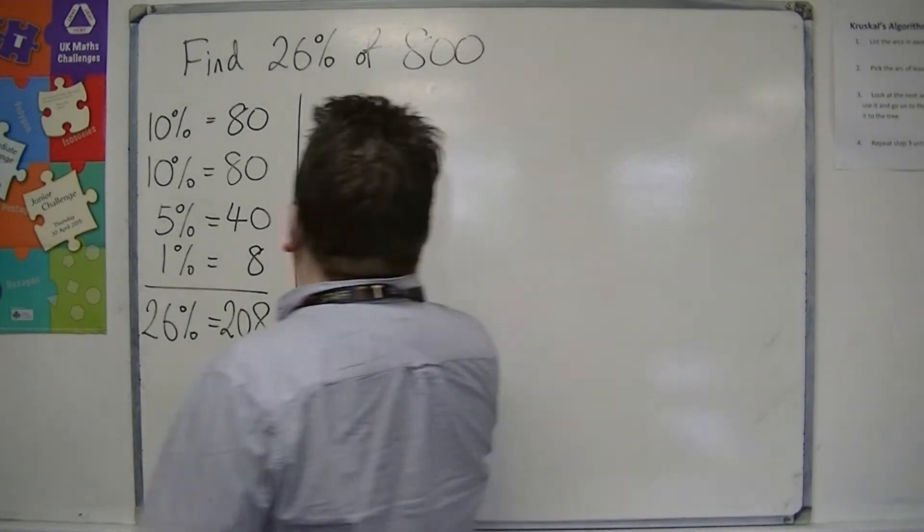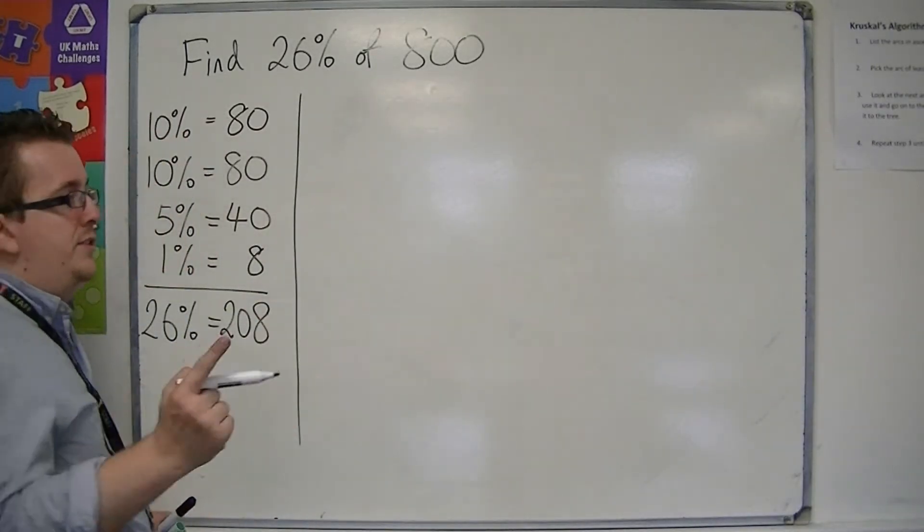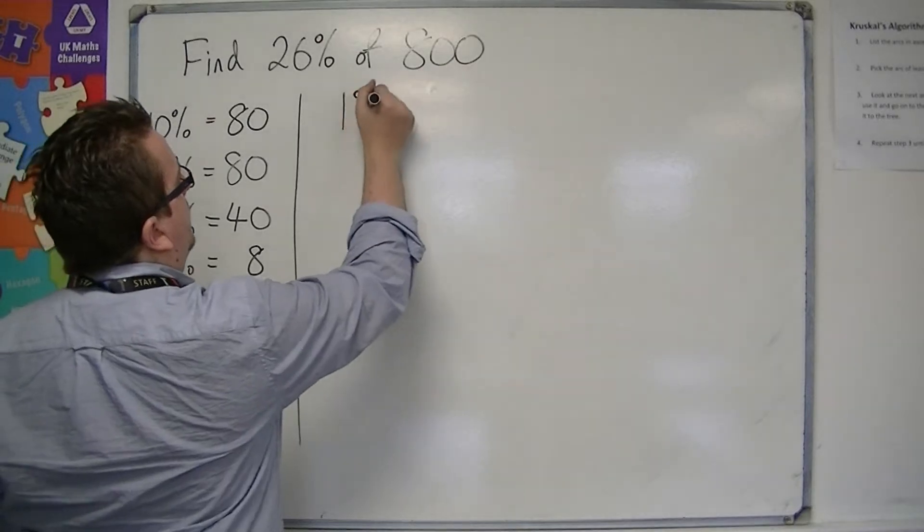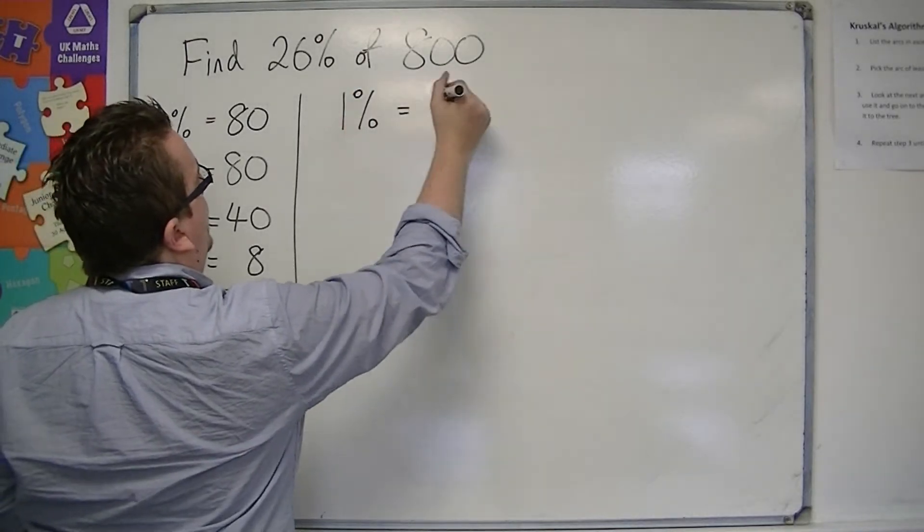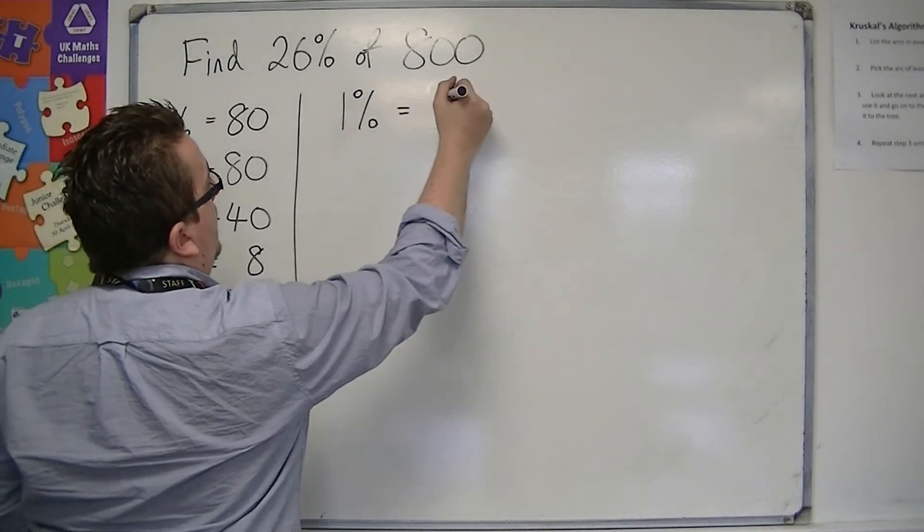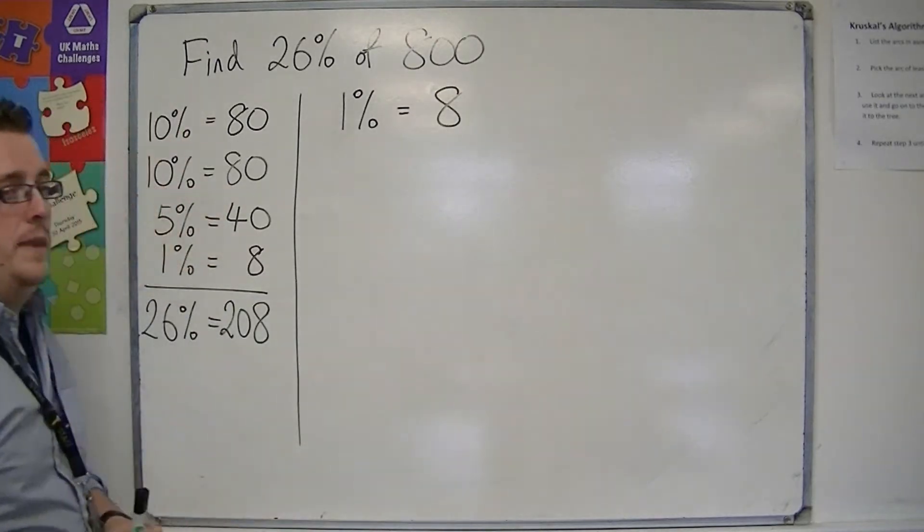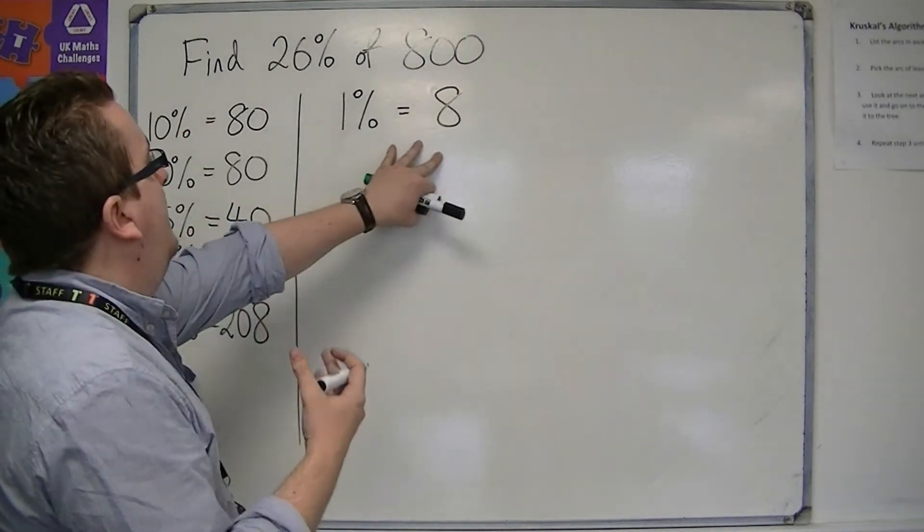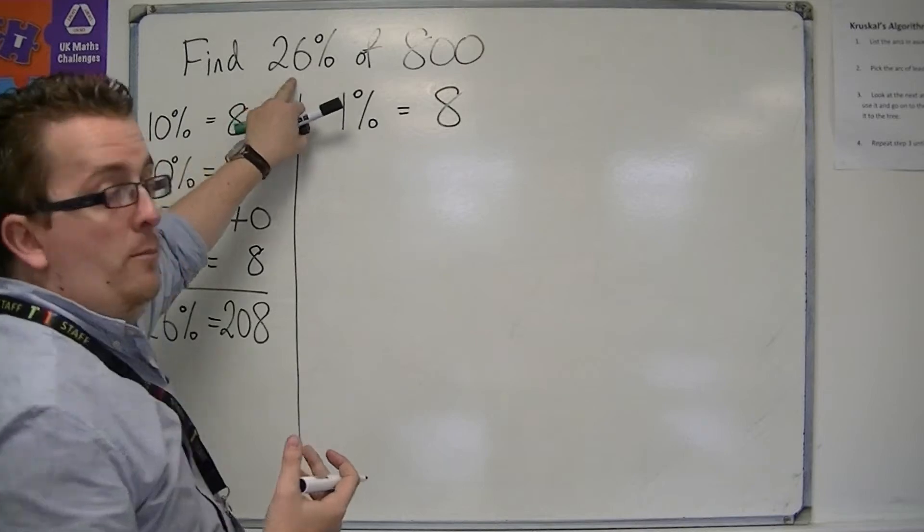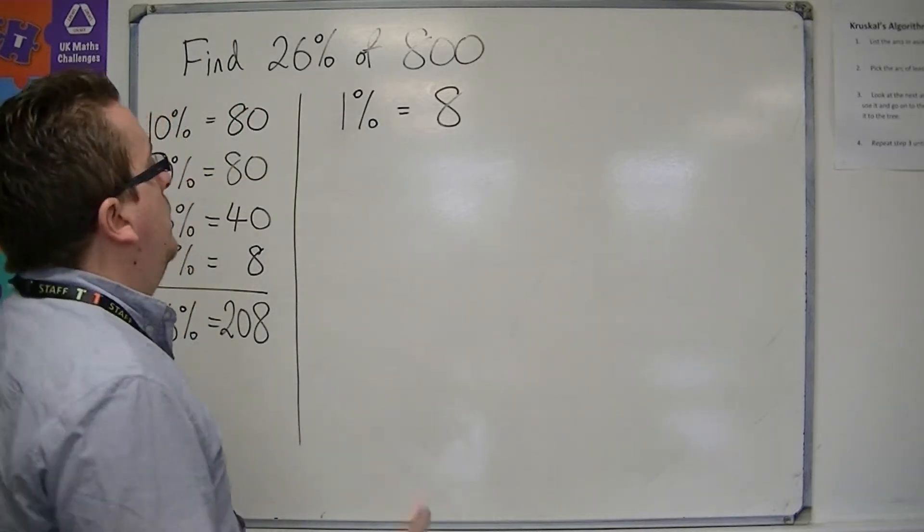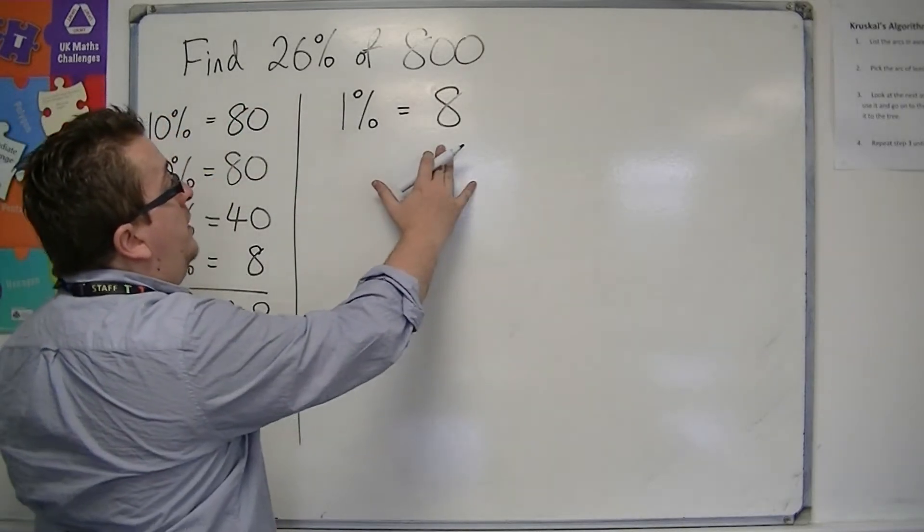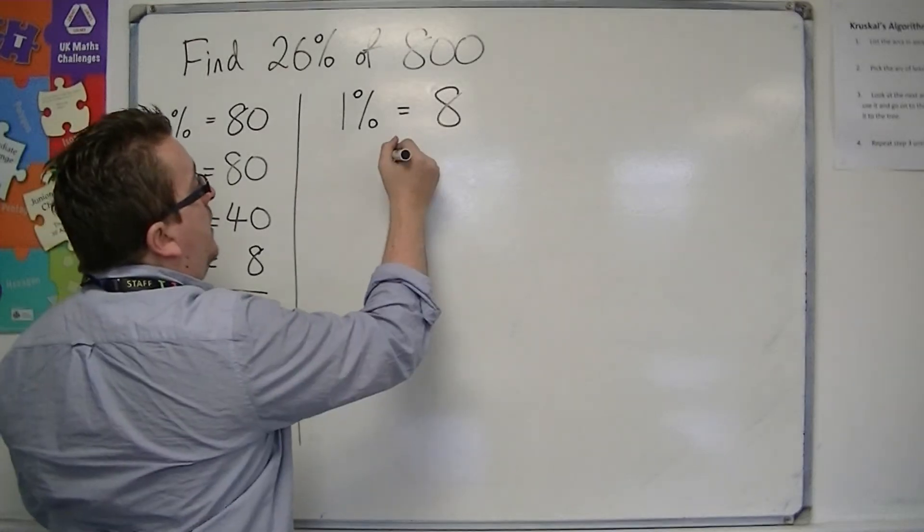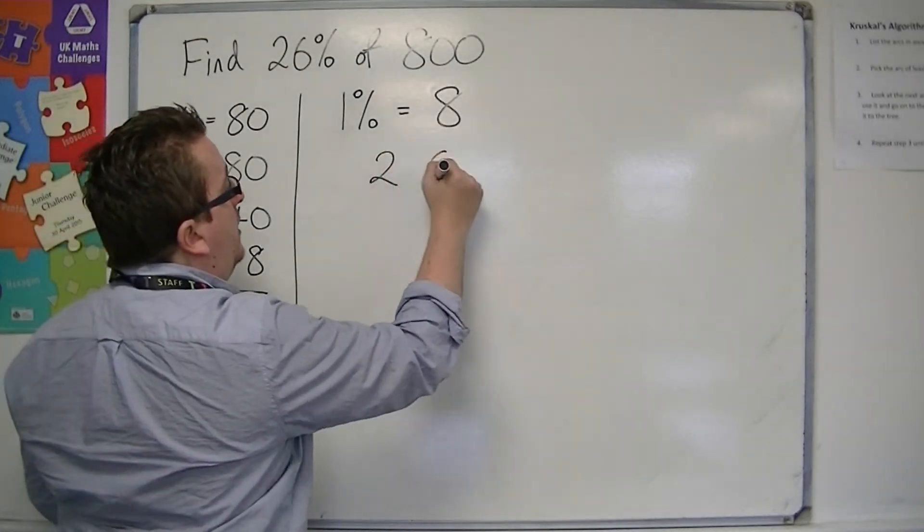Another method is to find 1% first, by dividing 800 by 100, which is just 8. And then multiplying that value by how much percent you need. So I found 1%, so 26% would be 26 times 8.